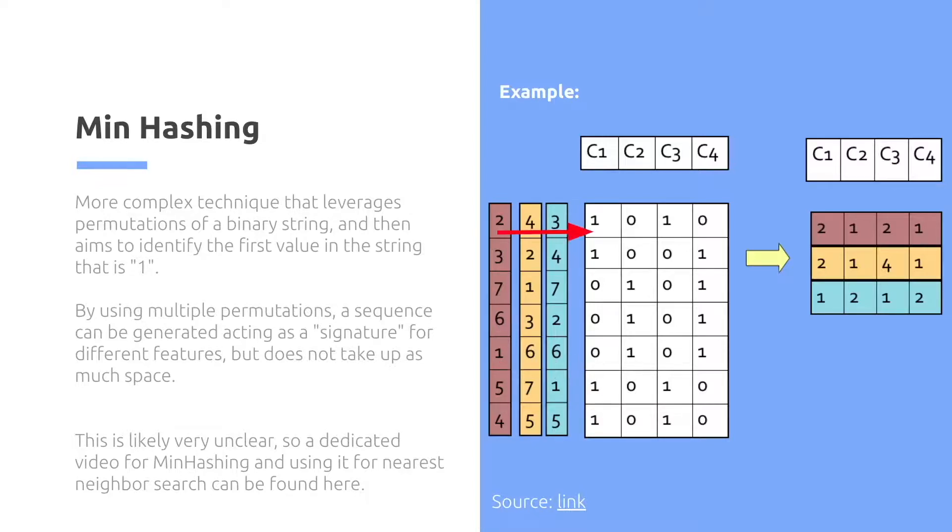So we continue until we get to a 1. So the 2 and the 1, the second item, and we denote it in our signature matrix, which is on the right side. So the columns are the different documents, and on the rows we have the different permutations. So it's the second item, same here. We check 1 and 0 for the yellow permutation, 2 and 1, and then we denote it with 2.